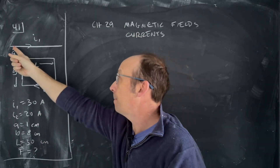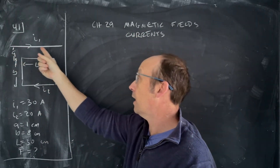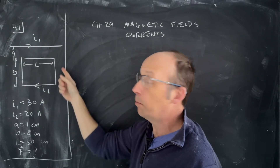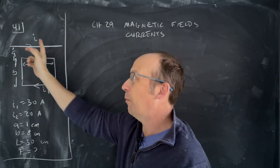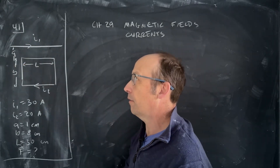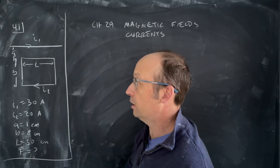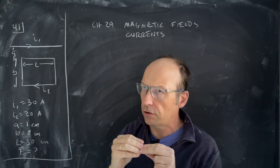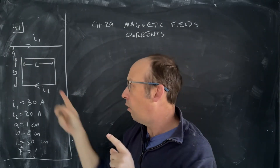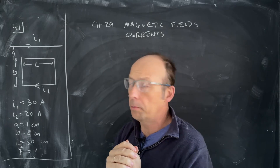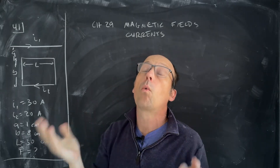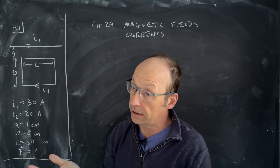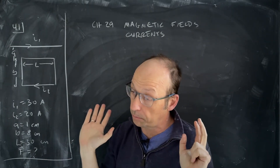There is a wire carrying current I1, and then a square loop carrying current I2, and we're given the dimensions and all these things. The question asks for the vector — they say unit vector notation — net force on that loop. Which is a bit odd because it didn't give us direction for x, y, and z, so we'll just have to pick.